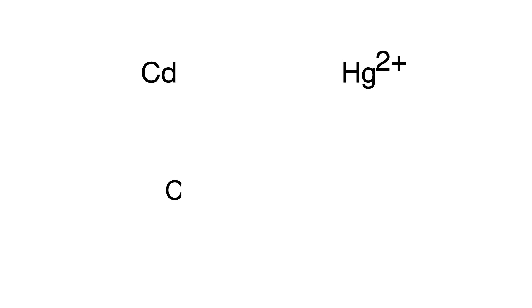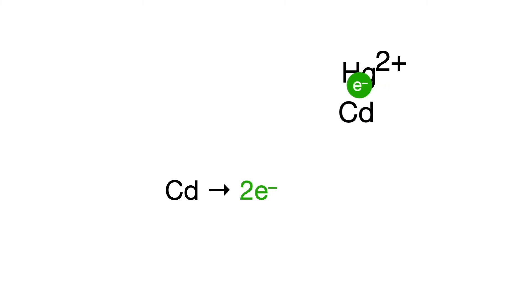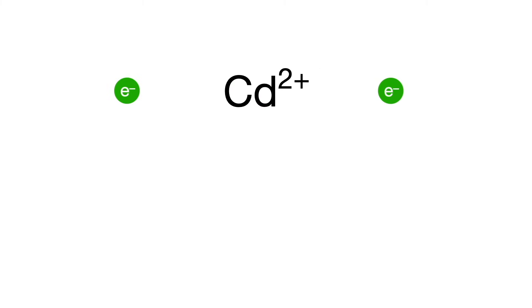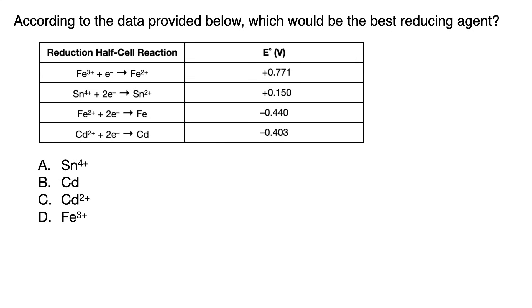This works every time because reducing agents reduce other atoms or molecules — they give electrons to other atoms or molecules, making those atoms or molecules negative or less positive, meaning they become reduced. In effect, the reducing agent loses electrons, becoming positive or more positive, meaning it gets oxidized. The more negative or less positive a half-cell or ion is, the more electrons it has to donate, making it a great reducing agent. So for best reducing agent questions, choose the most negative or least positive ion or atom in the most negative or least positive E value cell.